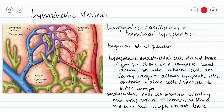The holes between our cells are fairly large and so they will allow whole cells to enter our lymphatic capillary, including bacteria, viruses, lymphocytes, wandering macrophages, and any other cellular debris that might be present in that tissue.